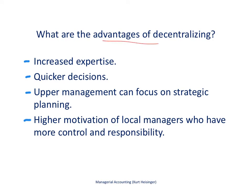What are some advantages of decentralizing? First, increased expertise. Take Home Depot as an example — a very large organization selling many types of home improvement products, spread throughout the United States and other countries. They operate in southern, northern, western, and eastern regions, each with different needs. Stores don't all carry exactly the same products for each region. Managers overseeing specific regions have increased expertise in knowing what customers need.